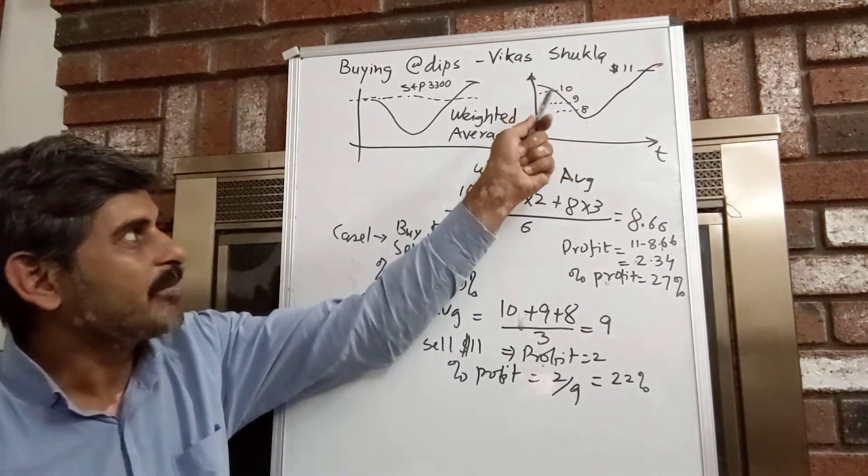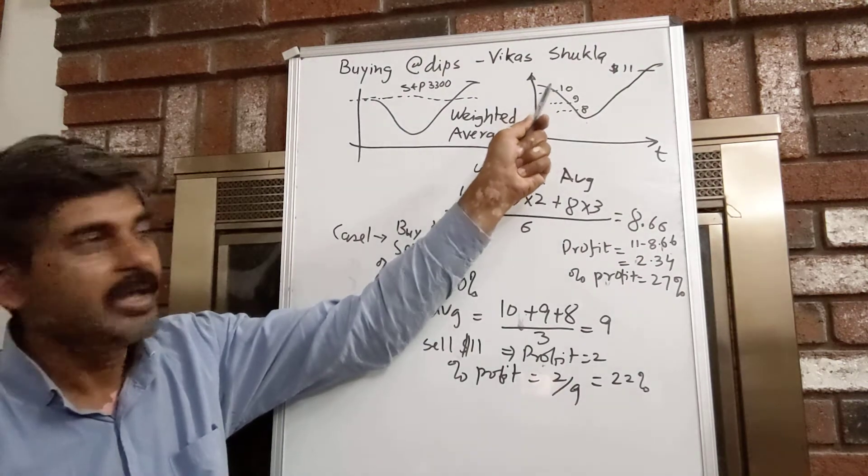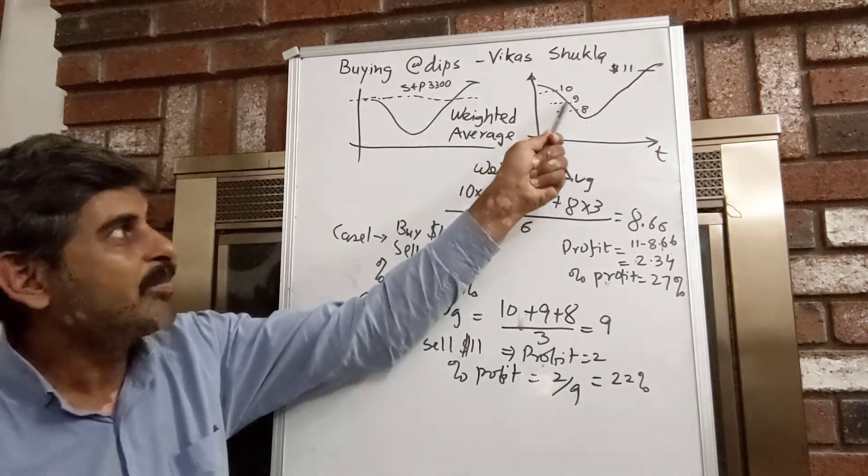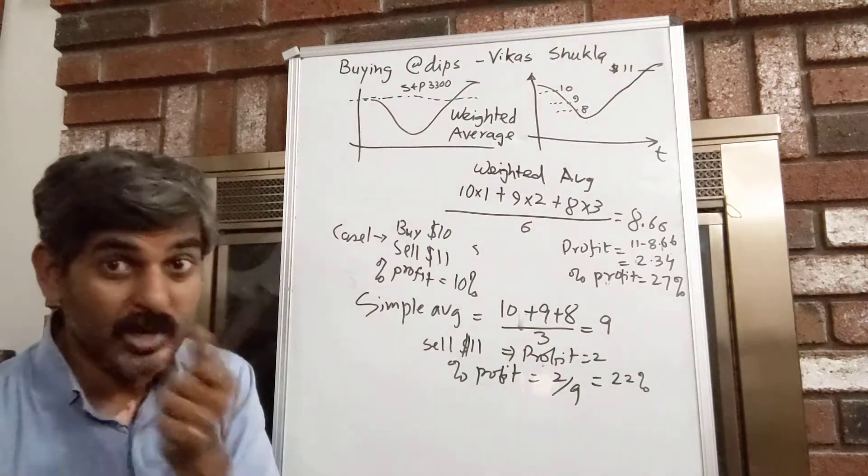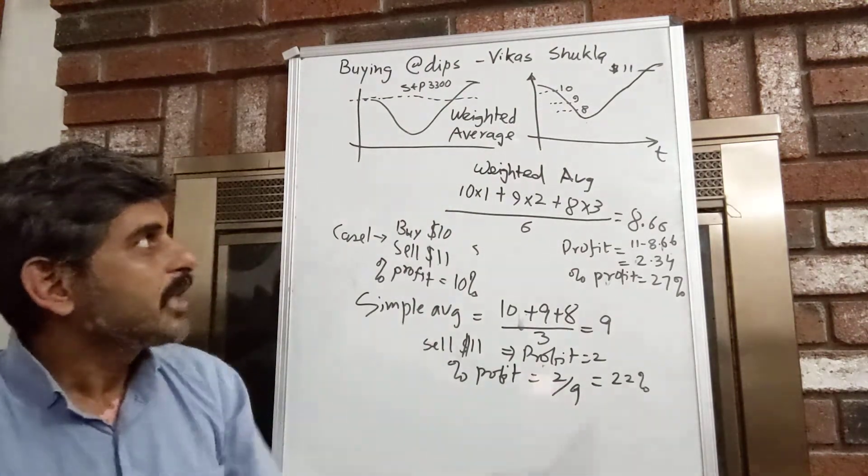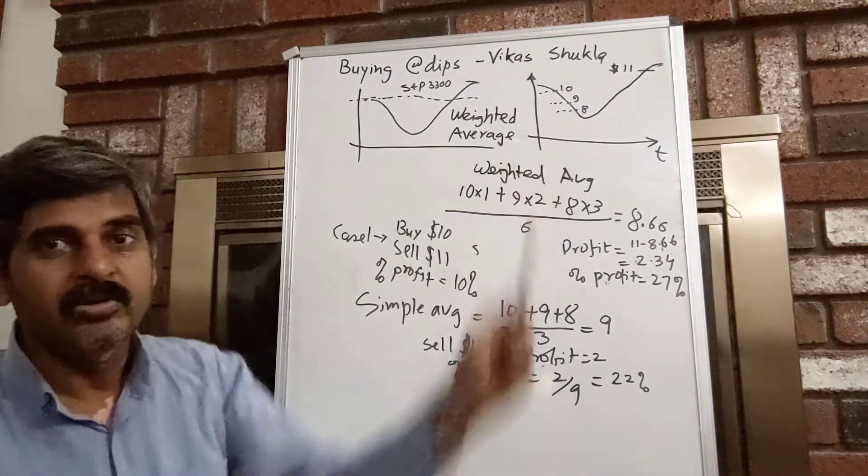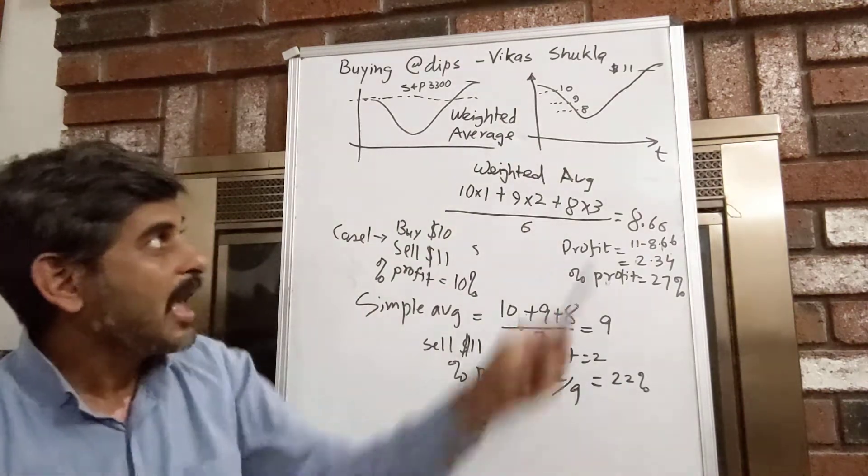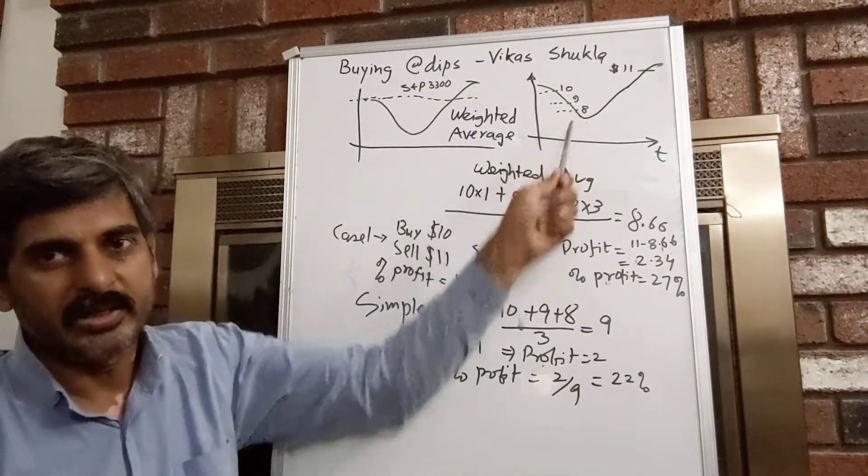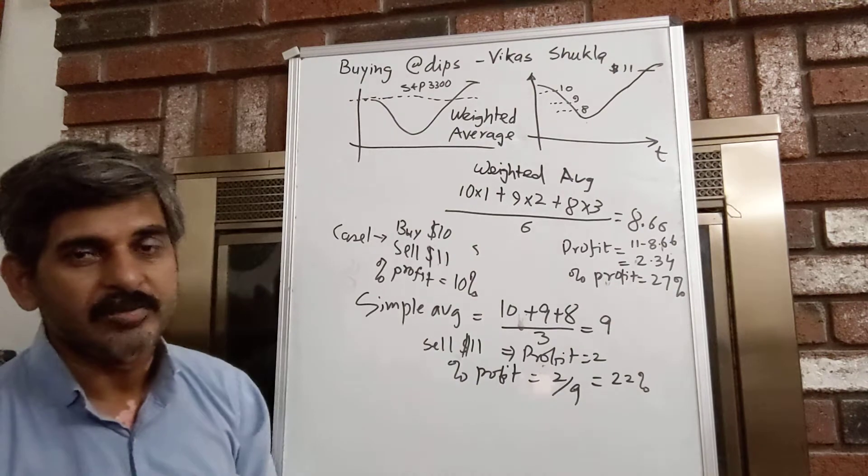So for example, if I buy 100 shares here, it goes down like 10%, I buy 200 shares of it in 2x quantity. So that's the concept of weighted average.